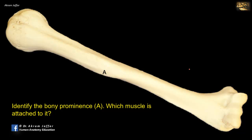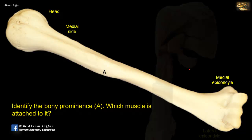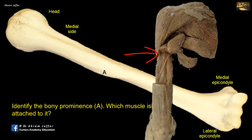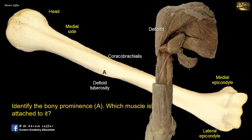Identify the bony prominence A — which muscle is attached to it? This is a tuberosity on the lateral side of the humerus at the middle of its shaft. To identify the sides of the humerus: the medial side has two prominent features — the head of the humerus located medially at its proximal end, and the prominent medial epicondyle at the distal end, which can be easily identified compared to the less prominent lateral epicondyle. The bone opposite to it on the medial side provides attachment for the coracobrachialis muscle.